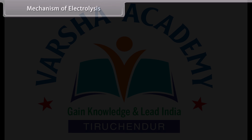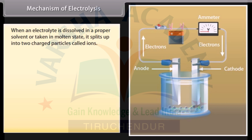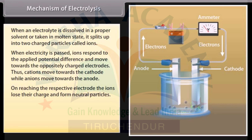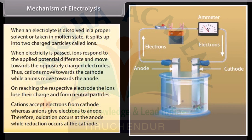Mechanism of electrolysis. When an electrolyte is dissolved in a proper solvent or taken in molten state, it splits up into two charged particles called ions. When electricity is passed, ions respond to the applied potential difference and move towards the oppositely charged electrodes. Cations move towards the cathode while anions move towards the anode. On reaching the respective electrode, the ions lose their charge and form neutral particles. Cations accept electrons from cathode, whereas anions give electrons to anode. Therefore, oxidation occurs at the anode while reduction occurs at cathode.